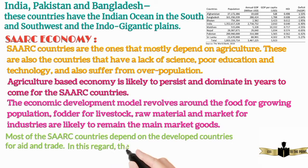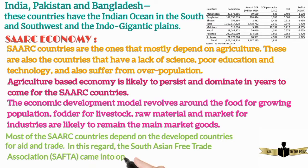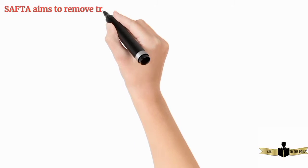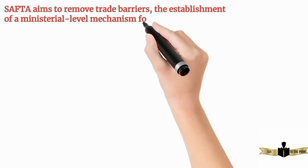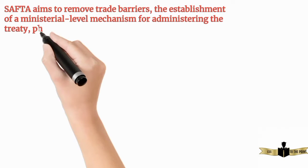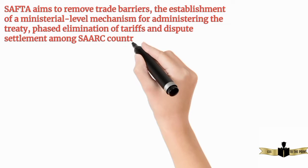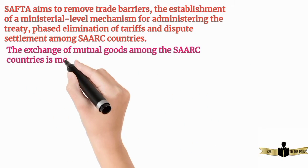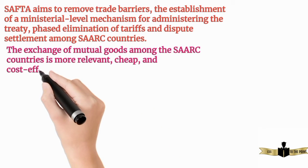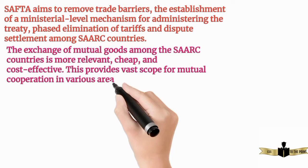In this regard, the South Asian Free Trade Association, SAFTA, came into operation on January 1, 2006. SAFTA aims to remove trade barriers, establish a ministerial level mechanism for administering the treaty, facilitate elimination of tariffs, and settle disputes among SARK countries. The exchange of mutual goods among SARK countries is more relevant, cheap, and cost-effective, providing vast scope for mutual cooperation in various areas.